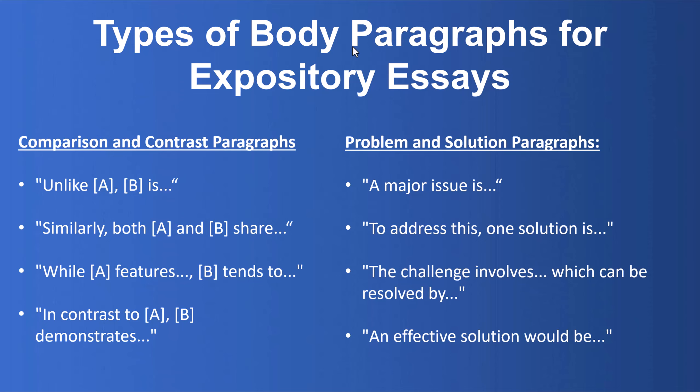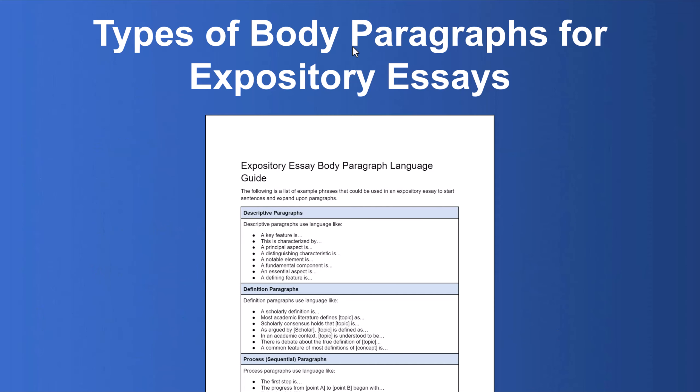Let's look at two types of body paragraphs more closely. One is a comparison and contrast paragraph — the sort of language you'd use is things like 'unlike A, B is.' For example, if your essay explains what nationalism is, you can say 'unlike patriotism, nationalism is...' and compare and contrast the two. You could also do problem and solution paragraphs: 'a major issue is... and to address this issue, one solution could be...' Remember, take a very objective stance — not saying the solution 'should be,' but the solution 'could be,' presenting a few possible solutions. The template pack below includes sentence starters for each different type of paragraph you'd find in an expository essay.